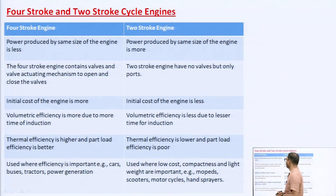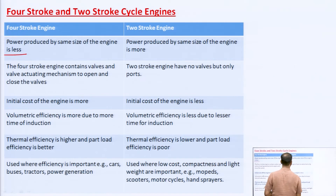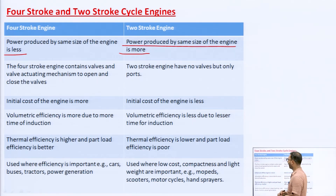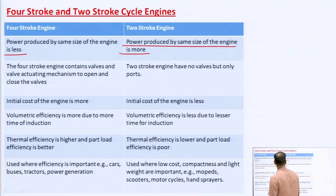Regarding power produced by the same size of engine: in the case of the four-stroke engine it is less, whereas in the case of the two-stroke engine, the power produced by the same size engine is more. If we keep the engine size the same, the power production in a four-stroke engine will be less compared to a two-stroke engine.